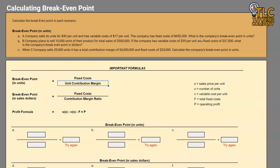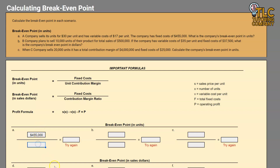Example A is probably the most basic way this information could be presented. Let's plug it into our formula. The first thing we need is fixed costs — looking at A, fixed costs are $455,000. We can plug that into our numerator.